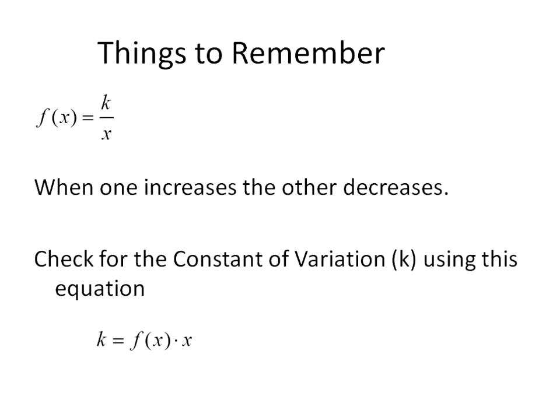A couple things to remember about inverse variation. That's our formula there. The function of x equals our constant divided by our x value. When one increases, the other decreases. Check for the constant of variation using this equation. Our function of x times our x value gives us our constant of variation.